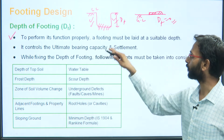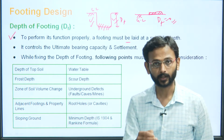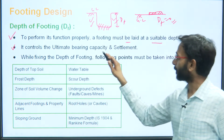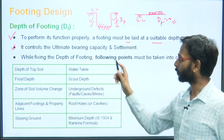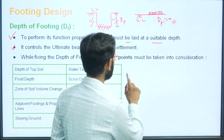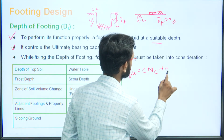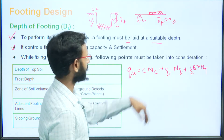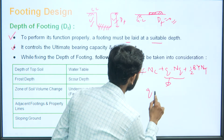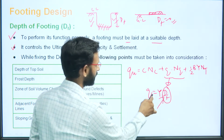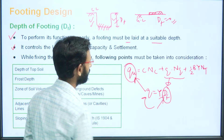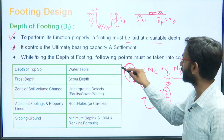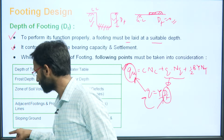The first point: to perform its function properly, a footing must be laid at a suitable depth. It controls the ultimate bearing capacity and the settlement. If we talk about the B·γ·Nγ term, the second term Q is given by γ·Df. This Df affects the surcharge, which ultimately affects the net ultimate bearing capacity. So the depth of the footing is influencing the bearing capacity.